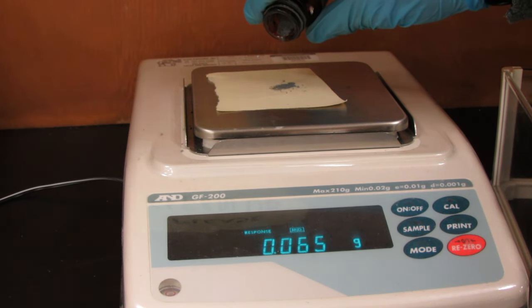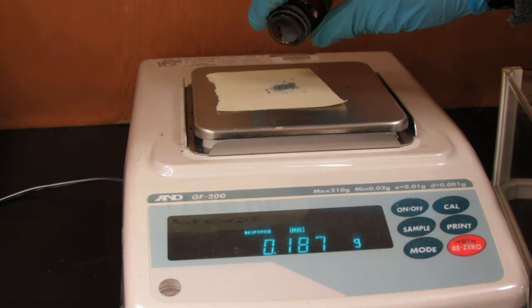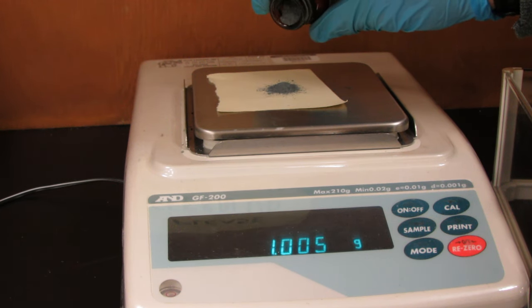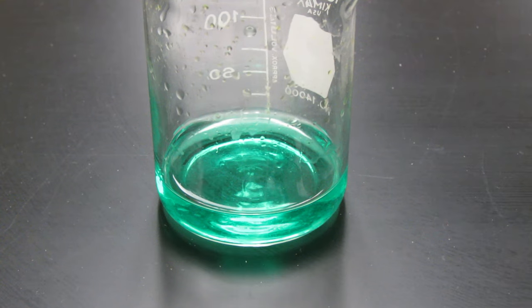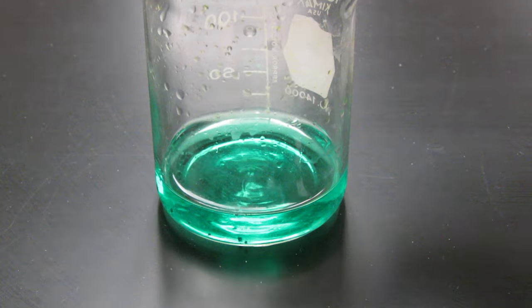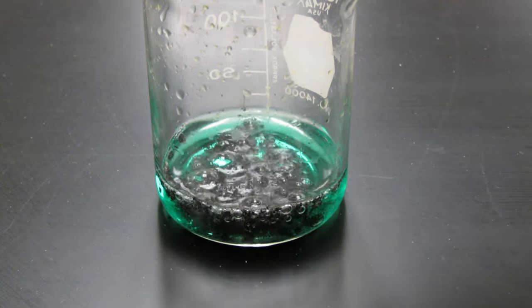Next, you need to weigh out one gram of zinc powder. Now add this to the copper chloride solution, and it should begin to bubble and react.